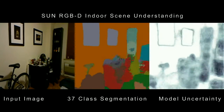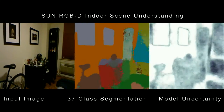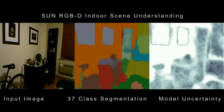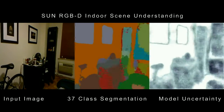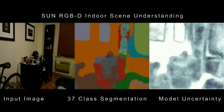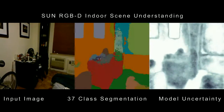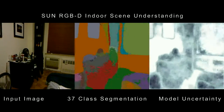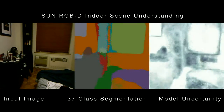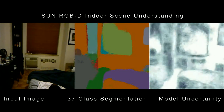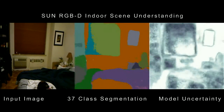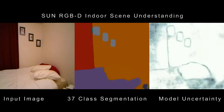Segnet only requires RGB input, and our system does not use any depth input. Note that these results are computed from individual frames, and no time-based smoothing is used in our prediction.